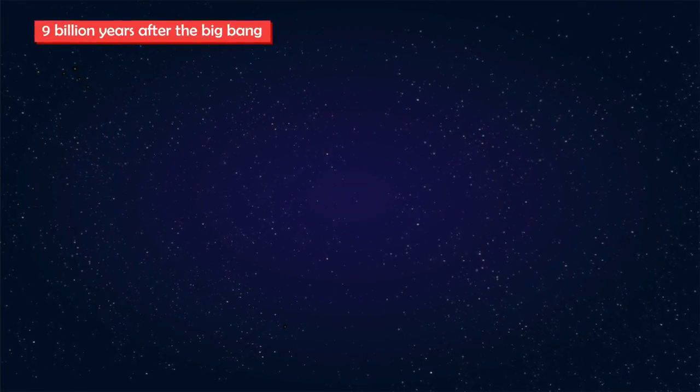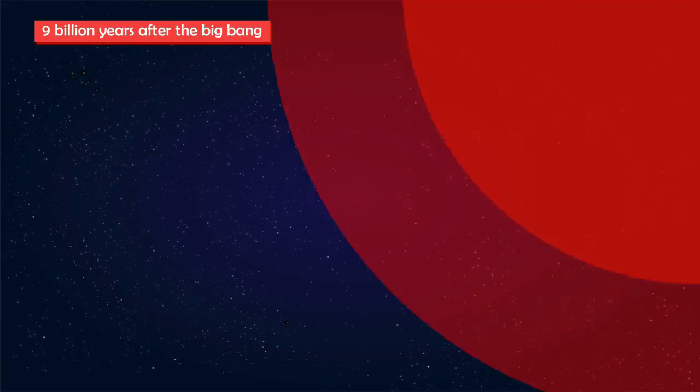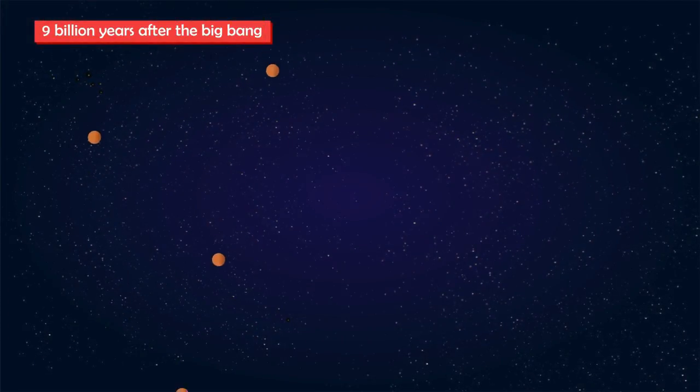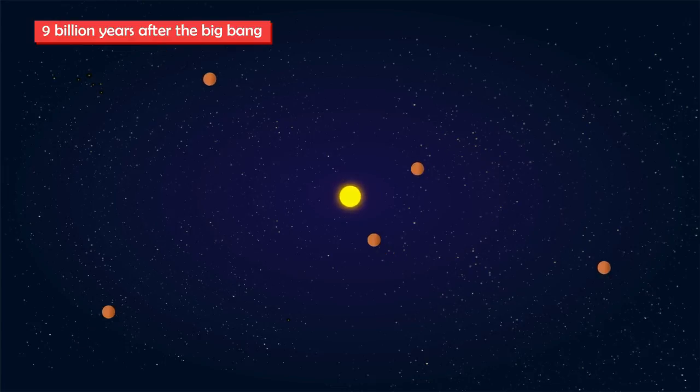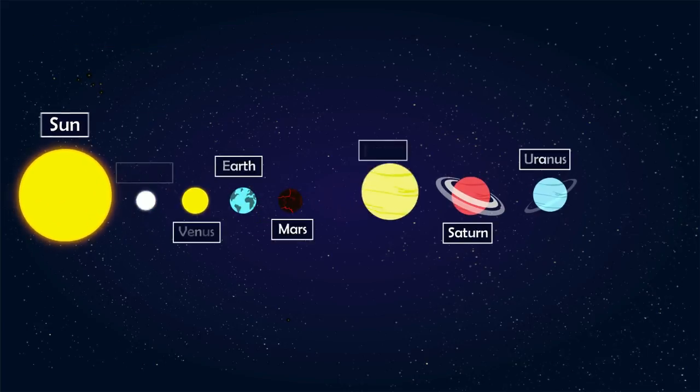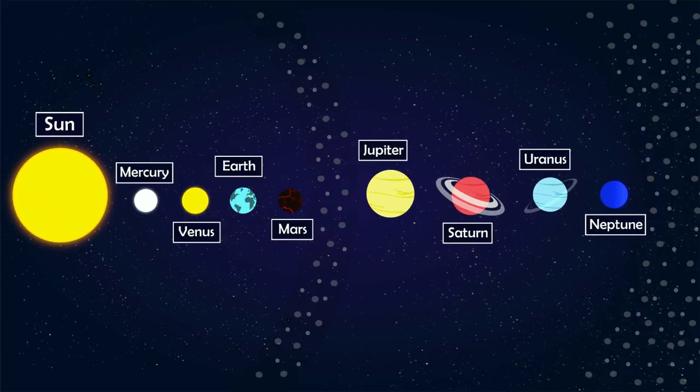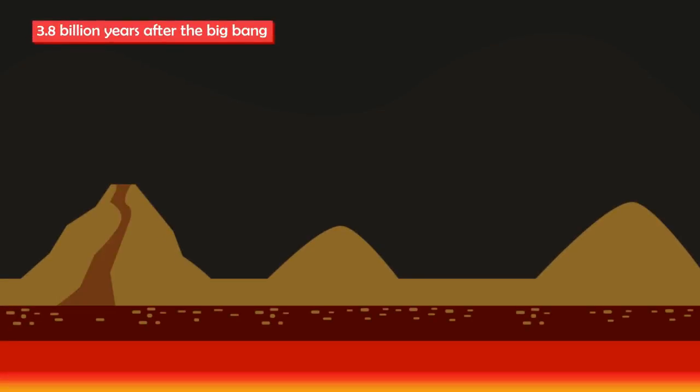Around 9 billion years after the Big Bang, thanks to the explosion of a nearby star, a cloud of gas and dirt in our Milky Way started to collapse under its own gravity. As the cloud began to accelerate, inertia and gravity flattened it into a huge spinning disk, giving birth to the Sun, planets, moons, and asteroids.